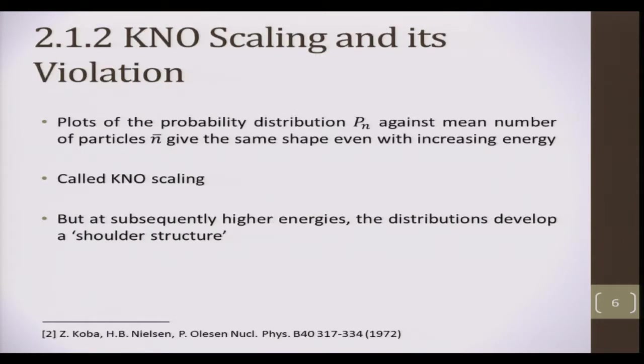We find that Koba, Nielsen and Olesen suggested this multiplicity distributions would follow a universal scaling law, meaning that even with increasing energy, the multiplicity data, when scaled, would fall on a universal scaling curve. This was known as KNO scaling.